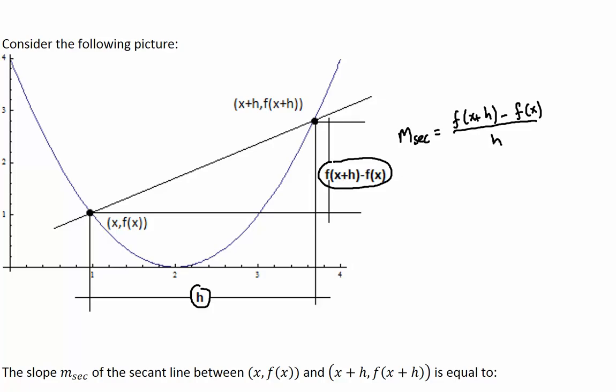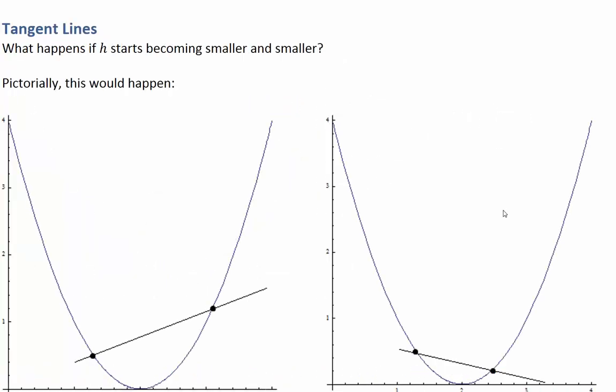So what we're going to do now, since this is giving us an average rate of change, what we're going to try to do is we're going to try to let h become smaller and smaller and smaller. And what that will do is going to move this point right here closer and closer and closer to the point (x, f(x)). As we let h get closer and closer to zero, we're going to get to the not average rate of change, but the instantaneous rate of change.